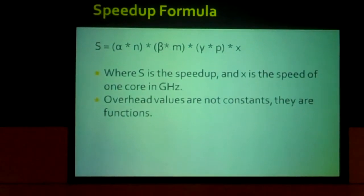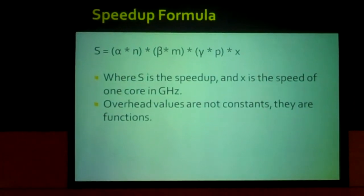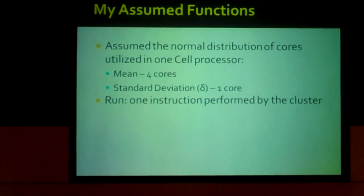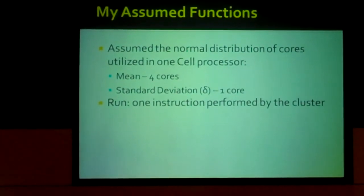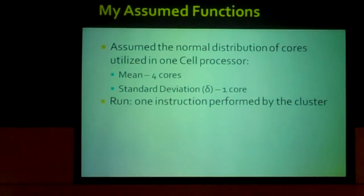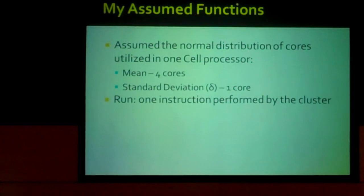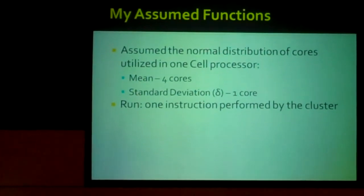Now these overhead values, alpha, beta, and gamma, are not constants. They're functions. And I assumed the function of the normal distribution of cores utilized in one cell processor, with the mean cores being four and the standard deviation of one core. And a run in my experiment is one instruction performed by the entire cluster.